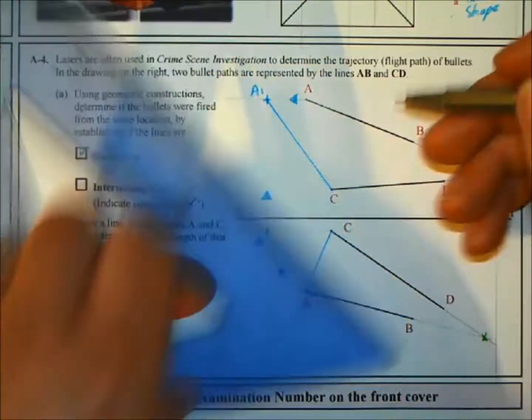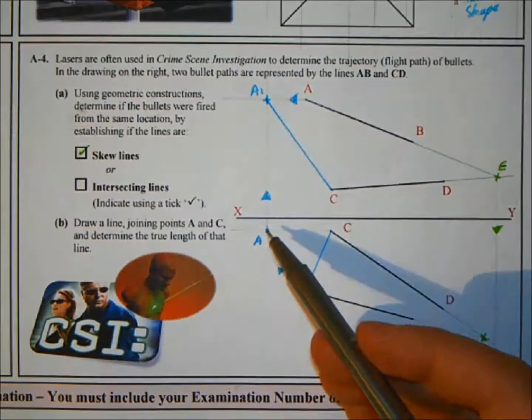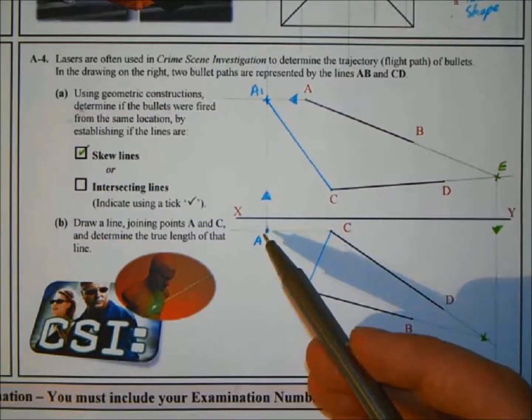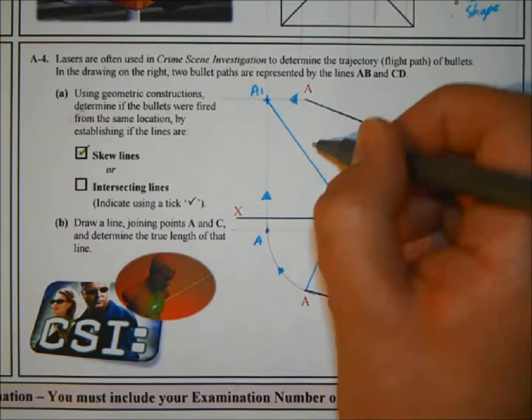And that's our true length. So by rotating it around so that it was parallel to the XY line, I'm finding that point that made it parallel to XY, in this case A, find it again in the elevation, join it back to C, that gave you your true length. So I can just indicate that.